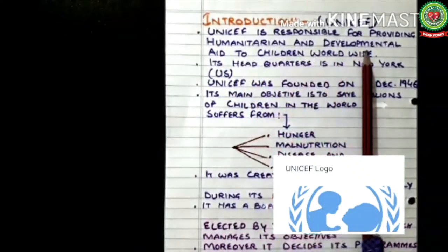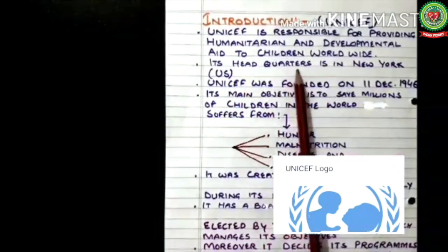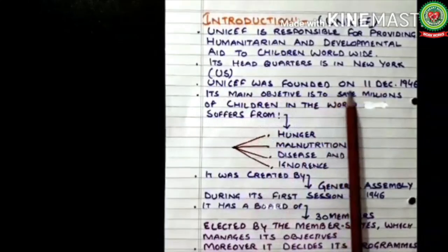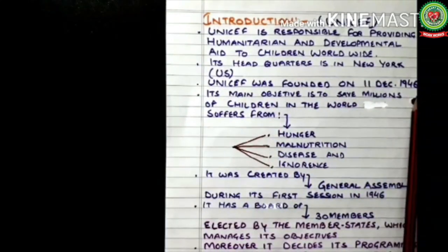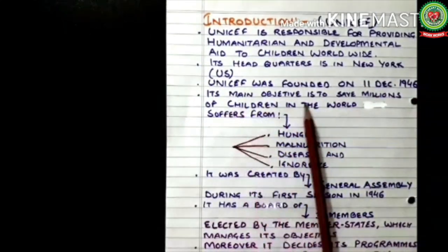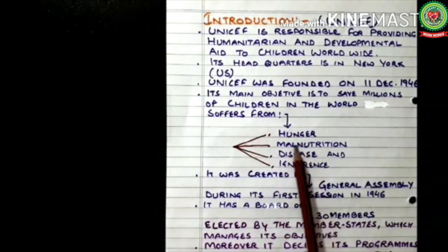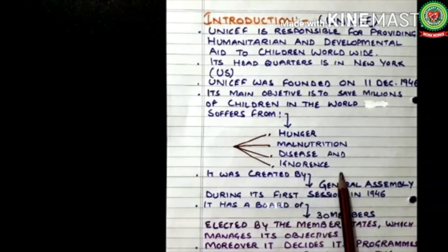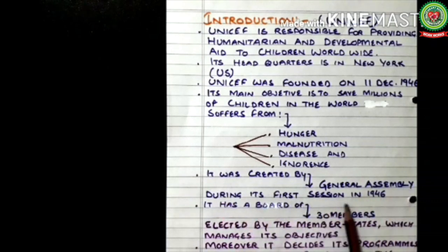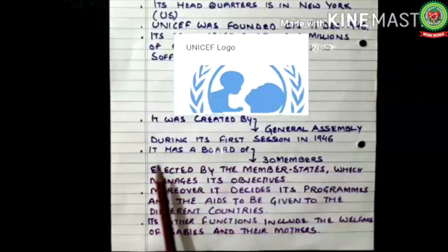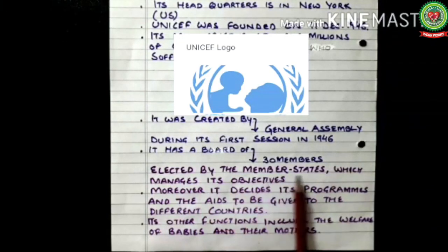Its headquarter is in New York. UNICEF was founded on 11th December 1946. Its main objective is to save millions of children in the world who suffer from hunger, malnutrition, diseases and ignorance. It was created by the UN General Assembly during its first session in 1946. It has a board of 30 members elected by member states.